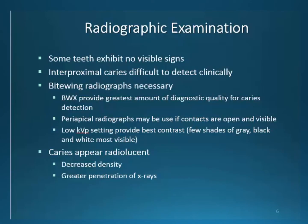Let's recap a few important issues. Though decay may exist, some teeth exhibit no visible signs of decay. Patients may state they do not feel any sensitivity and therefore may not accept your diagnosis — education is your only tool. Interproximal caries are very difficult to detect even to the trained eye. It is necessary to find the lesion at onset, even though a great amount of tooth destruction may have occurred prior to identification. Bite-wing radiographs are the best diagnostic tool for detecting proximal decay and becoming an expert at taking these radiographs is a must.